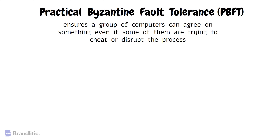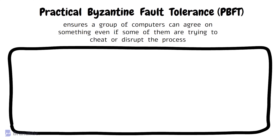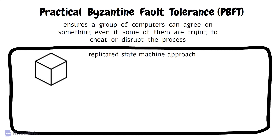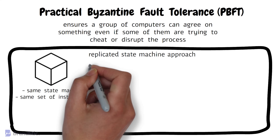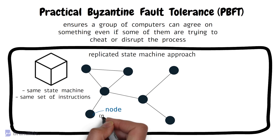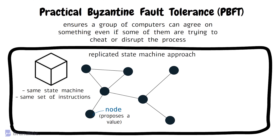PBFT works by using a replicated state machine approach. Each node has a copy of the same state machine and runs the same set of instructions. When a new value needs to be agreed upon, a node proposes a value and other nodes replicate the state machine by running the same instructions on their copy. Before the decision is made, a multi-step voting process takes place to ensure the majority of nodes agree on the value.